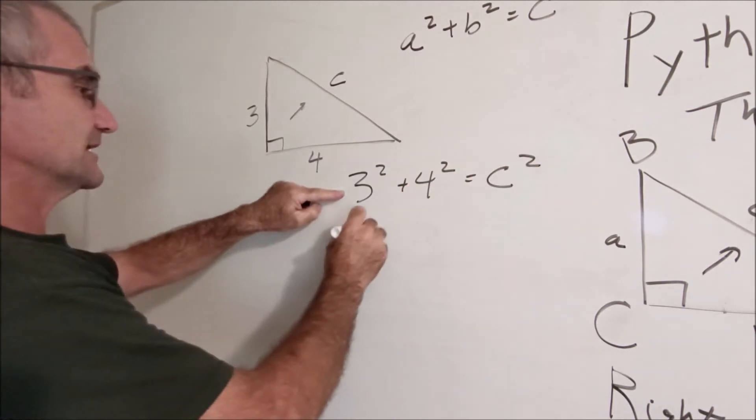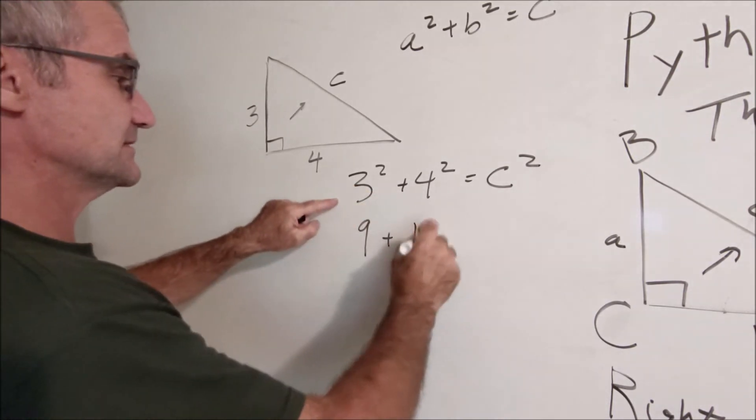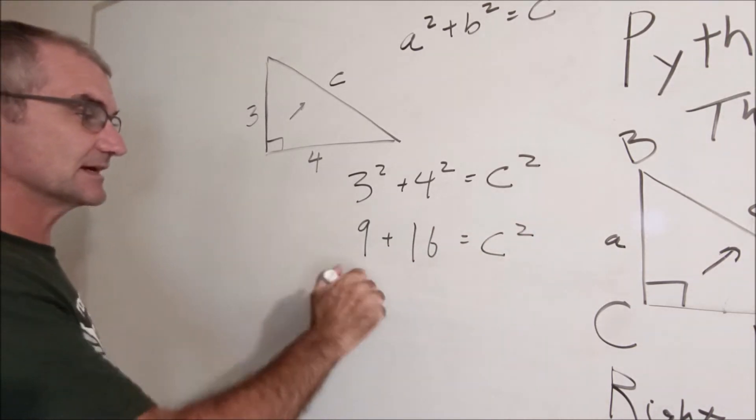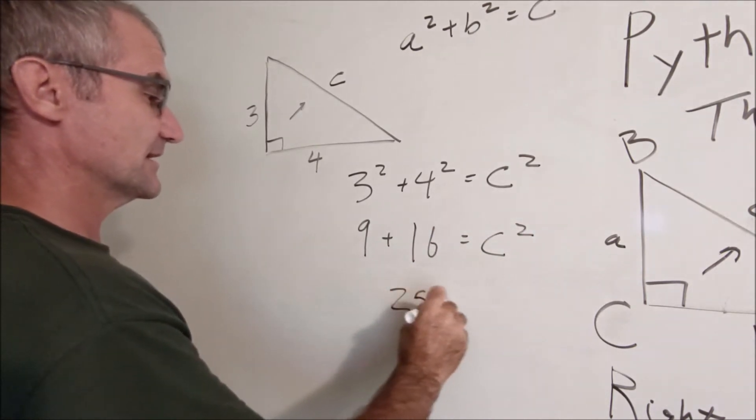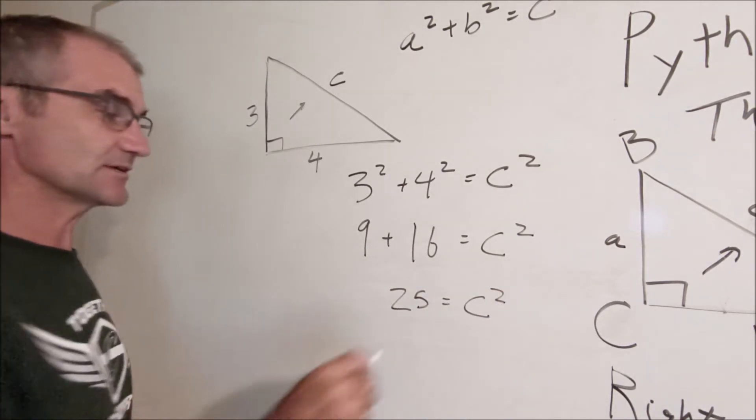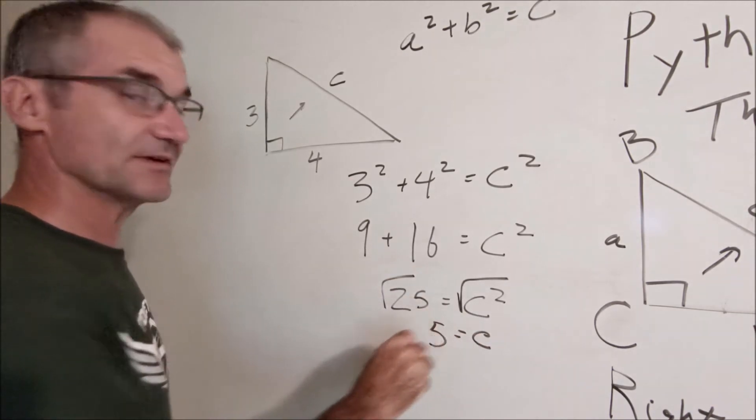Three squared is nine, three times three. Four squared, four times four is sixteen, is equal to c squared. Sixteen and nine is twenty-five, and that's equal to c squared. I want to get c by itself, square root of both sides, and c is equal to five.